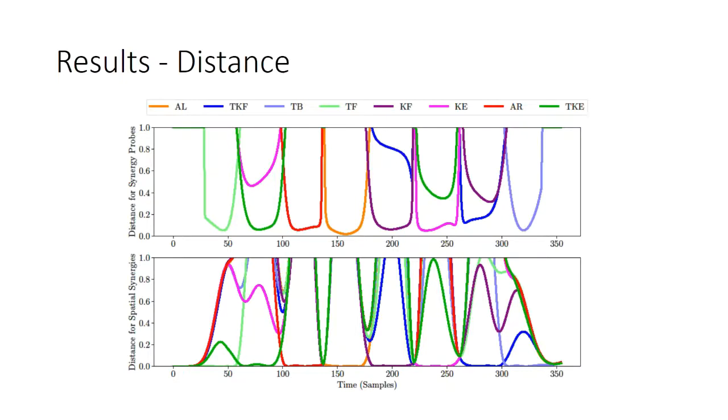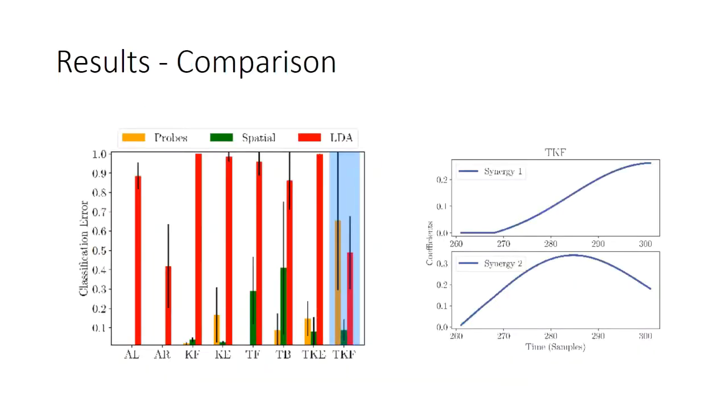After this, we calculated the classification error for all subjects and calculated the average. At first, we can see that the linear discriminant analysis couldn't classify well the movements because the training data was just one subject, it was too little data. For synergy probes and spatial synergies, in some cases, one is better than the other.